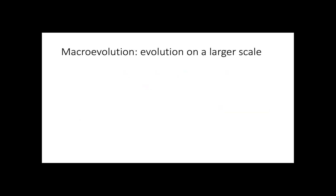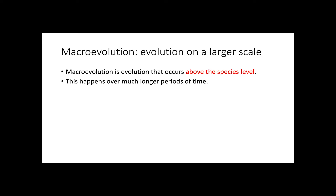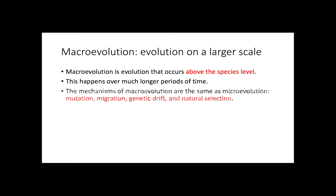Macroevolution is evolution on a larger scale that occurs above the species level. This happens over much longer periods of time, but the mechanisms of macroevolution are the same as microevolution. This essentially means that macroevolution is prolonged microevolution.